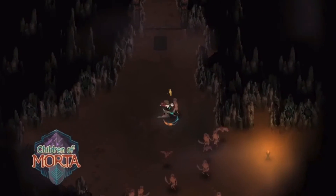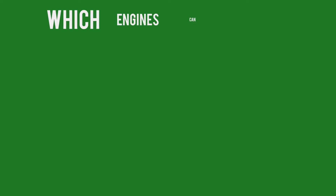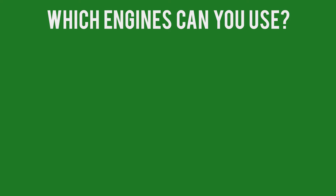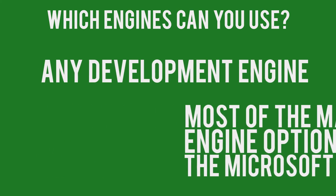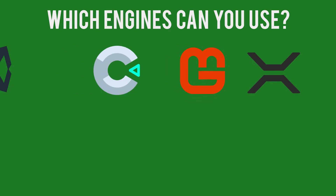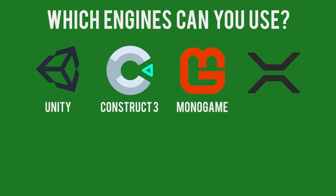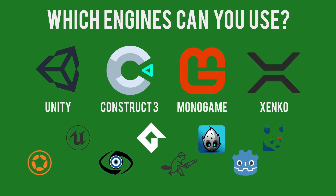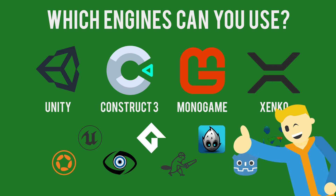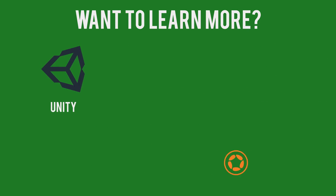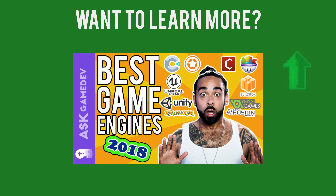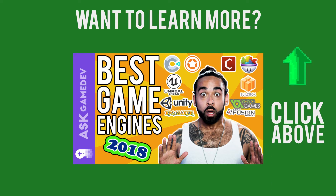On the topic of engines, the good news about developing for Xbox or Windows is that you can essentially choose from most any development engine. Most mainstream engine options support the Microsoft platforms. Microsoft has made official statements supporting game engines like Unity, Construct 3, Monogame, and Xenco, but those are hardly the only options. You can develop in your engine of choice and be confident that your game code will be put to good use. Check out our recent video on engines by clicking the card above.